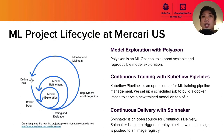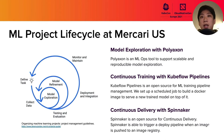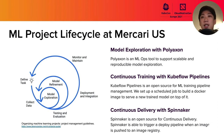At Mercari, we use these open-source tools for acceleration. For the model exploration phase, we use PolyAxon. PolyAxon is an ML Ops tool to support scalable and reproducible model exploration. For continuous training, we use Kubeflow Pipeline. Kubeflow Pipeline allows us to manage end-to-end ML workflows on top of Kubernetes. For continuous delivery, we use Spinnaker. Spinnaker is able to trigger a deploy pipeline when a new image is pushed to the registry, so we use Spinnaker for continuous delivery.